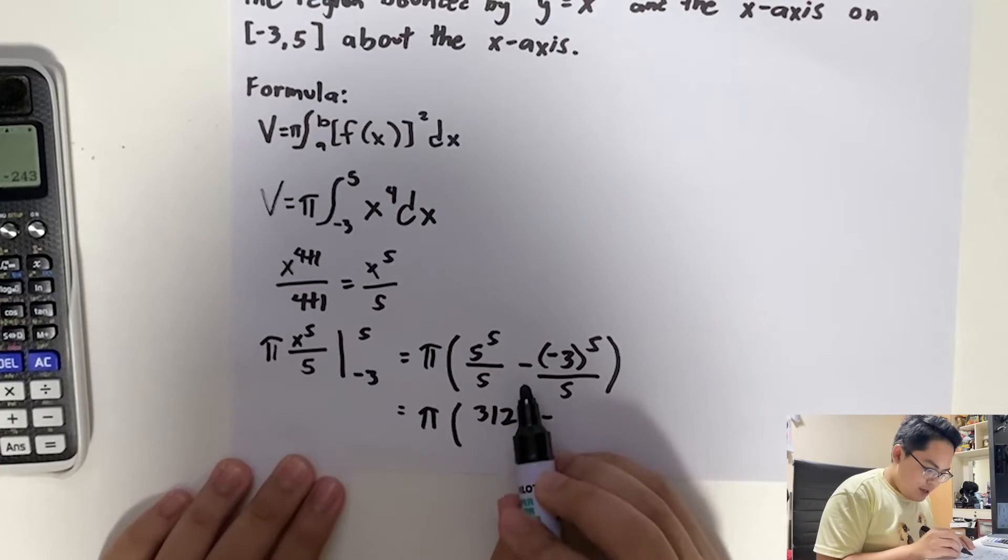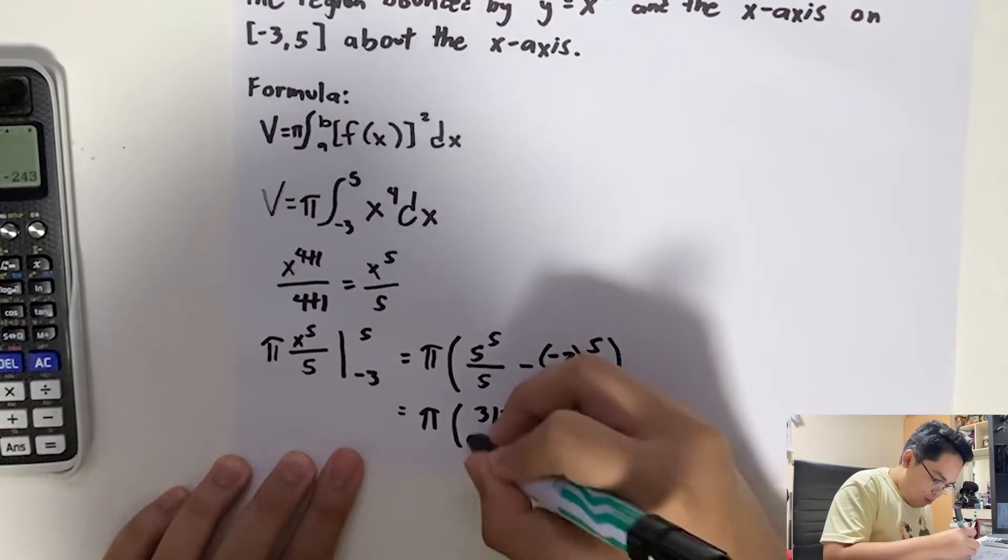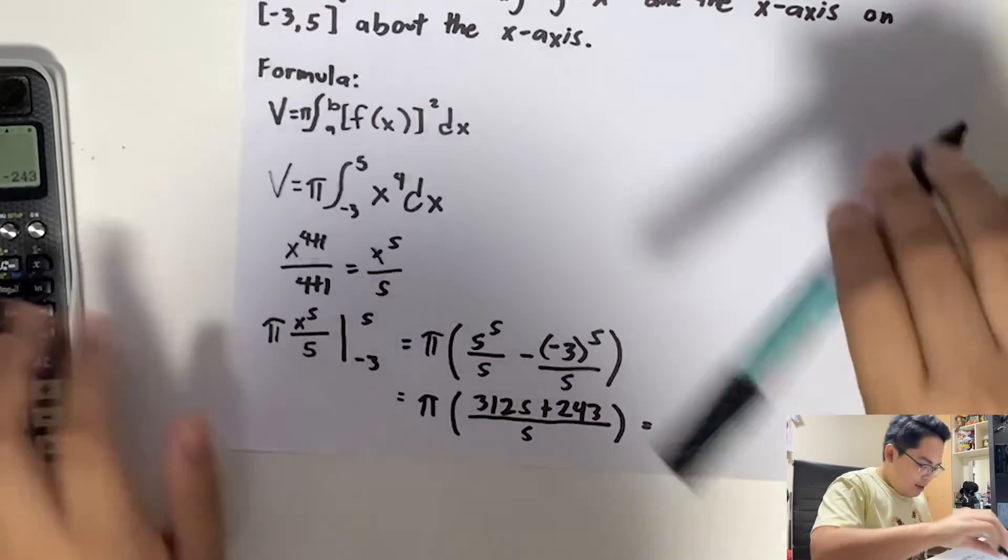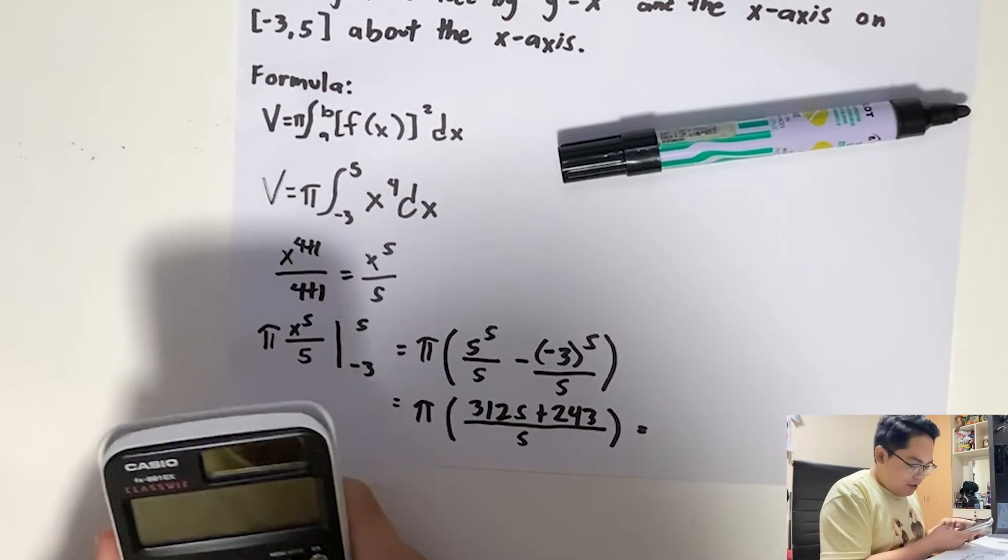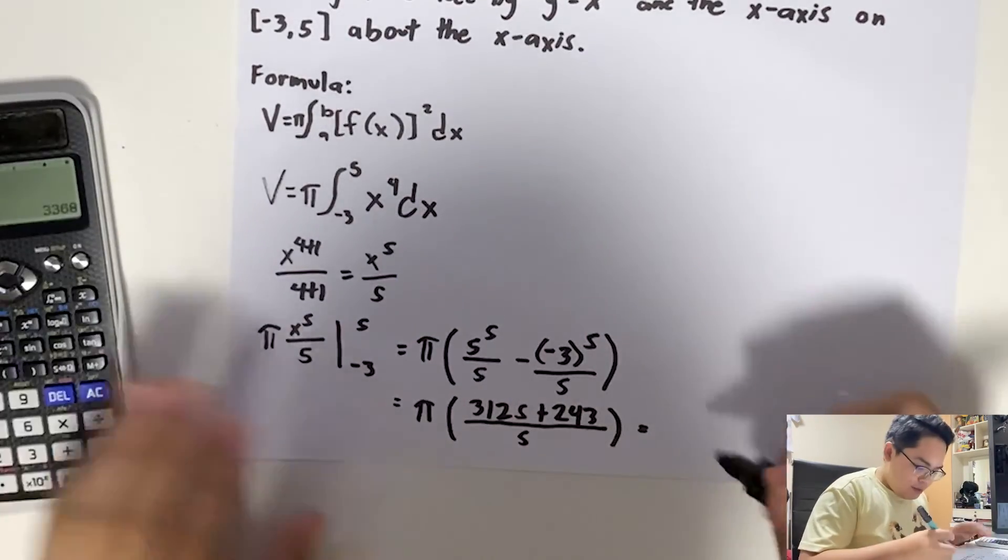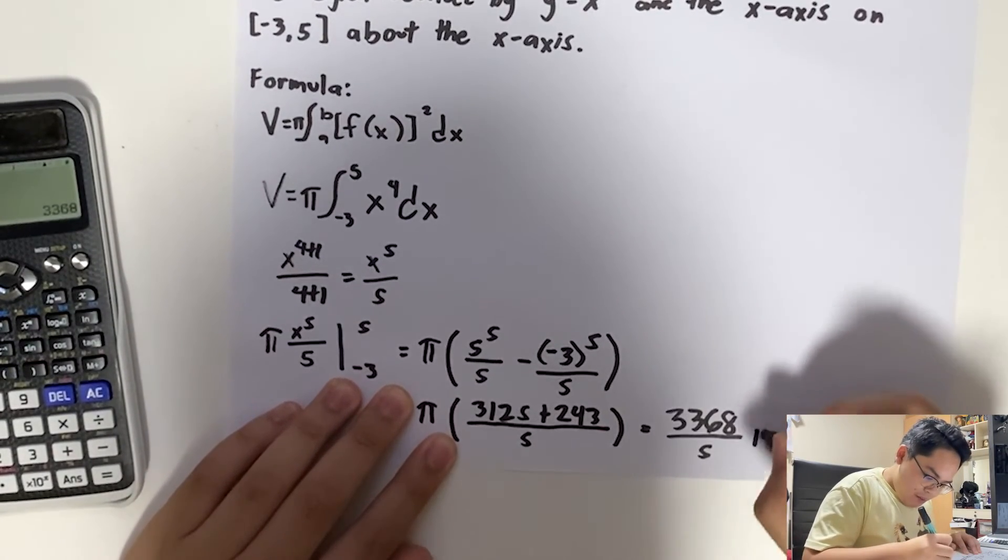Since it's a double negative, that becomes a positive. So 243/5. Then that becomes 3368/5π.